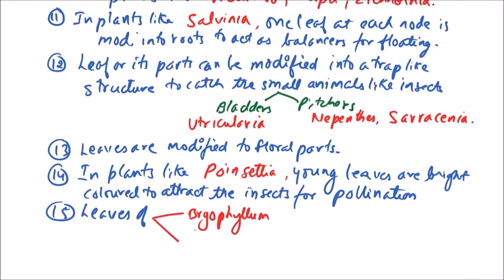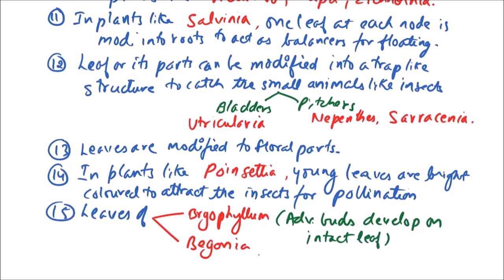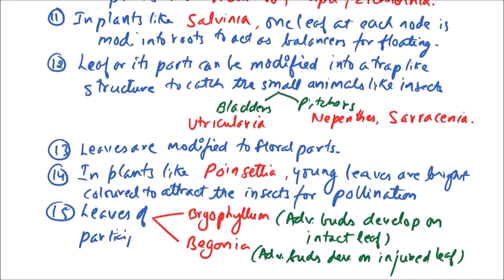In plants like Bryophyllum and Begonia, it is important to note that in Bryophyllum adventitious buds develop on intact leaves, while in Begonia adventitious buds develop on injured leaves. So leaves of such plants participate in vegetative reproduction.